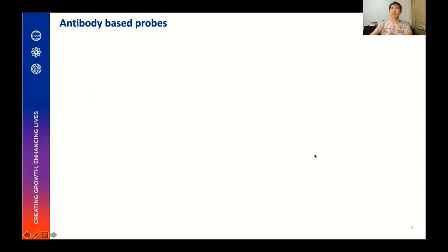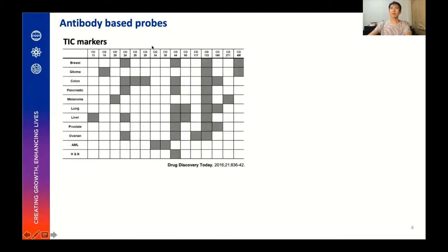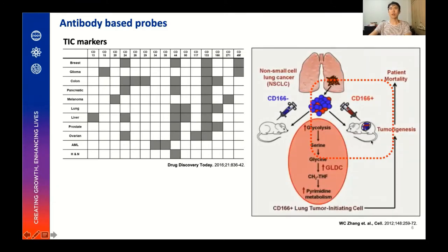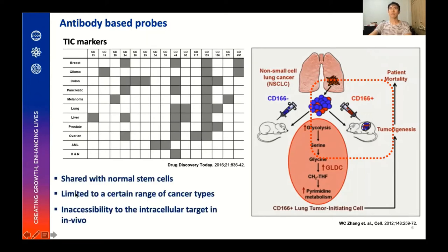To identify a particular type of cells, fluorescent conjugated antibodies that recognize the cell marker have been commonly used. Various antibodies have been developed against TIC surface markers and successfully applied for different types of cancer. For instance, CD166-positive cells have shown tumor-initiating ability while negative cells did not. However, these antibodies are not suitable for in vivo imaging and targeting TICs because these markers are also expressed in various somatic cells and normal stem cells. Also, multiple antibody combinations are usually required to target TIC selectivity, and they are limited to specific ranges of cancer types.